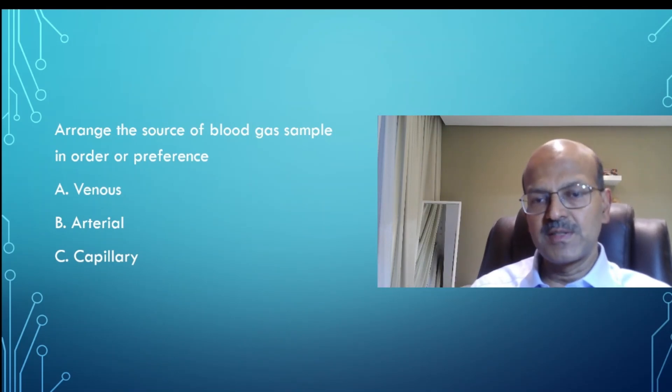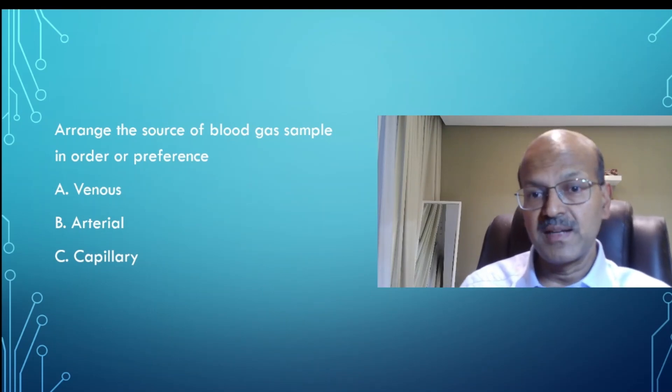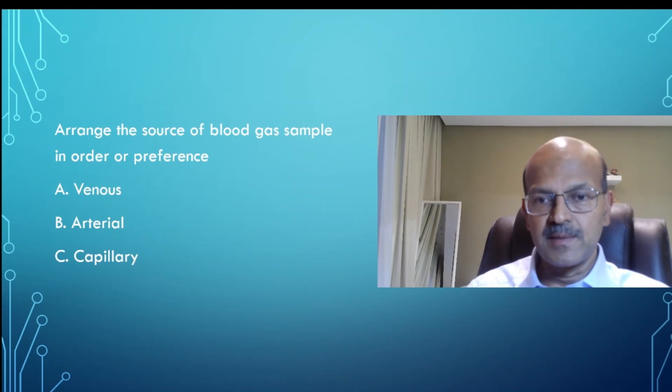If you have a transcutaneous oxygen monitor, you can use that in the sickest babies as well. So venous gas is only considered in situations where you are putting a cannula and you're going to take a baseline gas, for example. This is minimizing interventions where you accept something which is suboptimal in certain situations. It will give you an idea of what's happening.